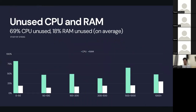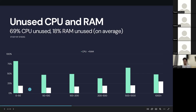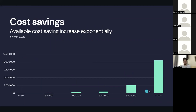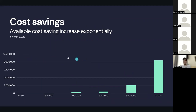According to a study by Sysdig analyzing AWS clusters, on average 69% of CPU is actually unused and 18% of RAM is actually unused. These numbers depend on the number of nodes — clusters with 1,000+ nodes have about 50% unused CPU, while smaller clusters have even more unused CPU. The result is a huge amount of wasted money. For companies with 1,000 or more nodes, it could be $10 to $11 million dollars per month extra that you could save.